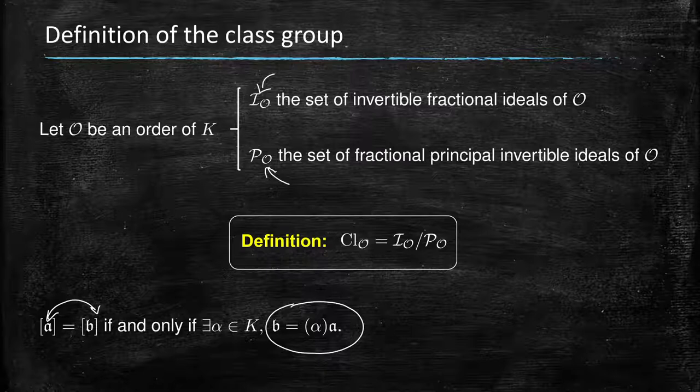In a way, we put a lot of things in the same class, everybody differing from a principal factor, and then we treat those as one element.